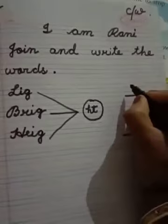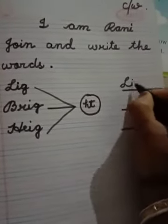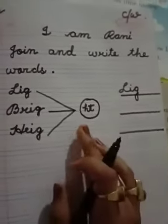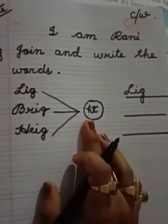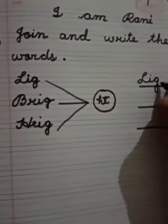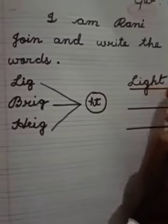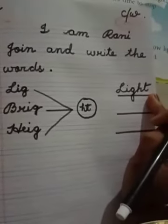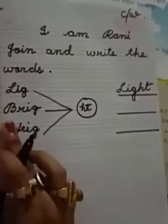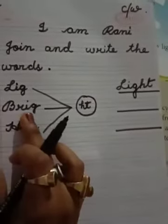So first of all write here L-I-G. And then what we will do? We will join with H-T. So write here H-T. L-I-G-H-T. Light. Next one B-R-I-G.